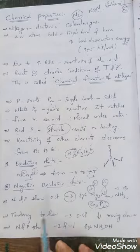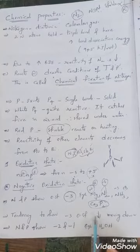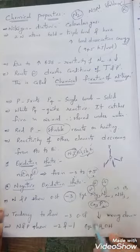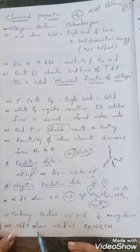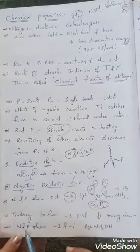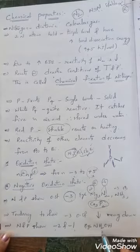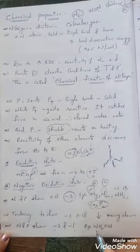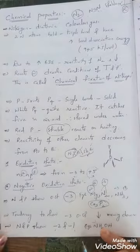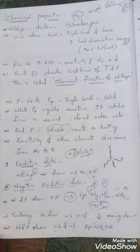Along with −3, nitrogen and phosphorus can also show −2 and −1 oxidation states. For example, in NH₂OH (hydroxylamine), nitrogen is in the −1 oxidation state. These are the negative oxidation states exhibited by group 15 elements.